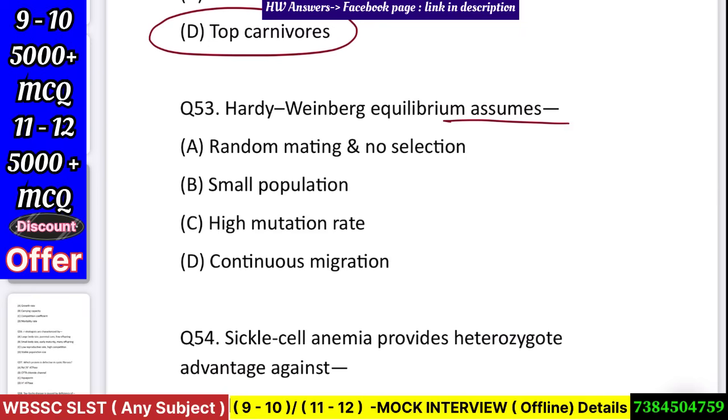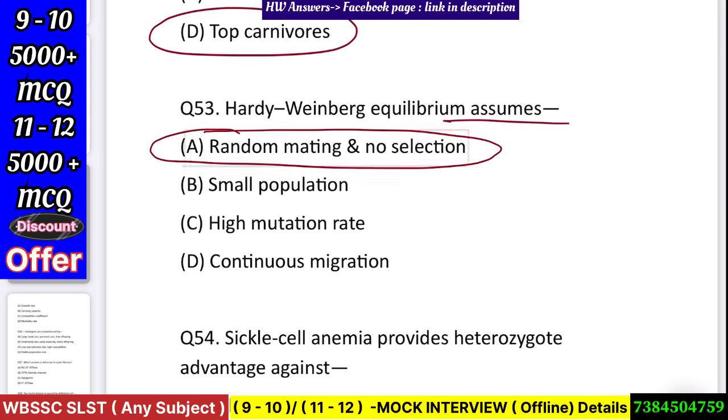Question number 54: Hardy-Weinberg equilibrium assumes — random mating and no selection, small population, high mutation rate, or continuous migration? Answer: random mating and no selection.